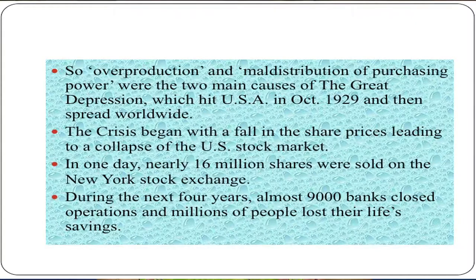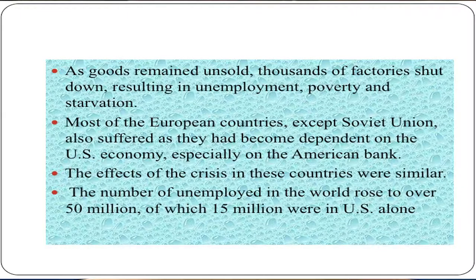Overproduction and maldistribution of purchasing power were the two main causes of the Great Depression, which hit the USA in October 1929 and then spread worldwide. The crisis began with a fall in share prices leading to a collapse of the United States stock market. In one day, nearly 16 million shares were sold on the New York Stock Exchange. During the next four years, almost 9,000 banks closed operations and millions of people lost their life savings. As goods remained unsold, thousands of factories shut down, resulting in unemployment, poverty and starvation. Most of the European countries, except Soviet Union, also suffered as they had become dependent on the US economy, especially on American banks. The number of unemployed in the world rose to over 50 million, of which 15 million were in the United States alone.